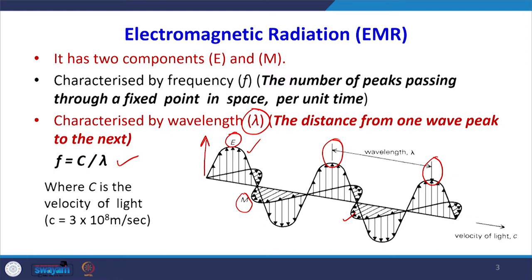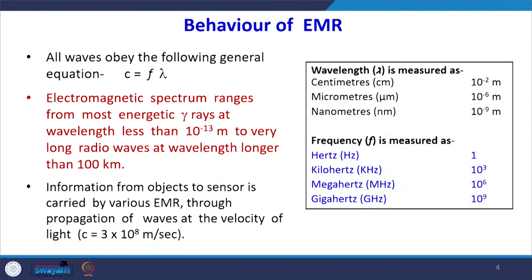Frequency is inversely proportional to wavelength. Since c is a constant — 3 × 10⁸ meters per second — higher frequency means lower wavelength, and lower frequency means higher wavelength. We should remember this relationship: c = f × λ. Once we know one quantity, we can calculate the other. If I know the frequency, I can calculate wavelength, and vice versa.